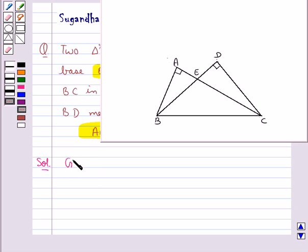So first let's write down what all is given to us. We have that angle A is equal to angle D equal to 90 degrees, and we have to show that AE into EC is equal to BE into ED.